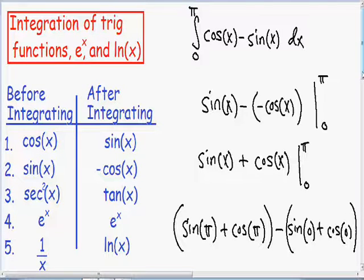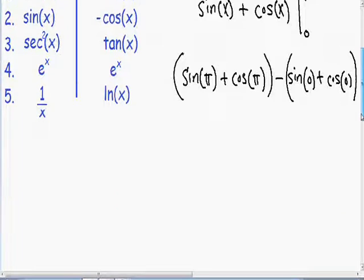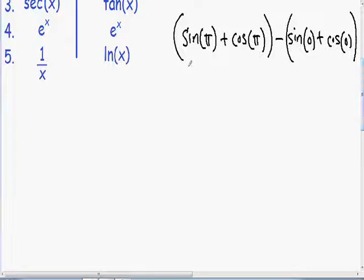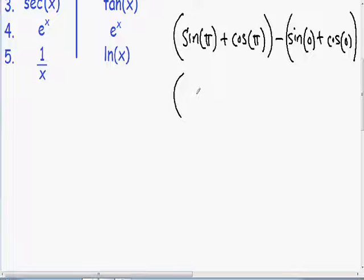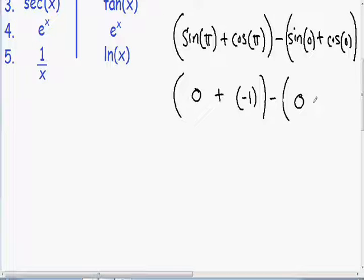Now we've taken this definite integral — the only thing left is to simplify as much as possible. You'll need to remember these trig values or use your calculator. If you're using your calculator, make sure it's in radians. The sine of pi is just zero, plus the cosine of pi is negative one, minus the sine of zero, which is just zero, plus the cosine of zero, which is just one.